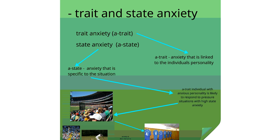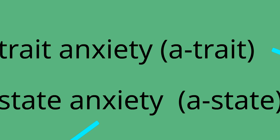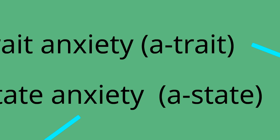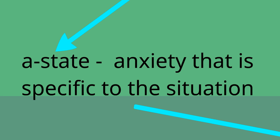The first dash point covers trait and state anxiety. Trait anxiety refers to the general level of stress that is a characteristic of an individual's personality. State anxiety is the temporary feelings of tension and nervousness related to a specific point in time, often found at the beginning of a game.